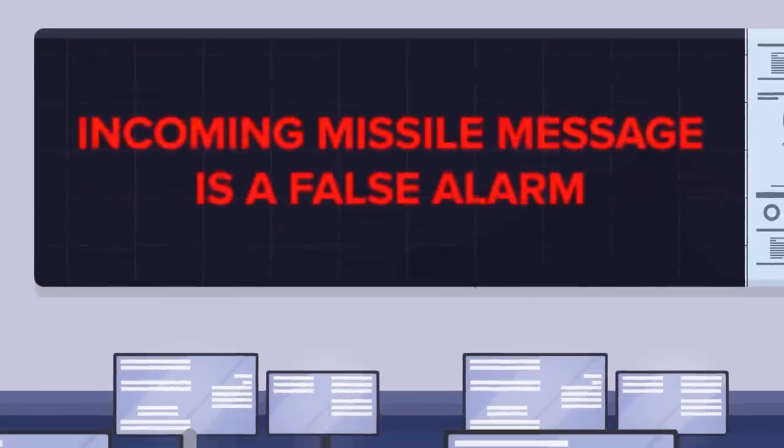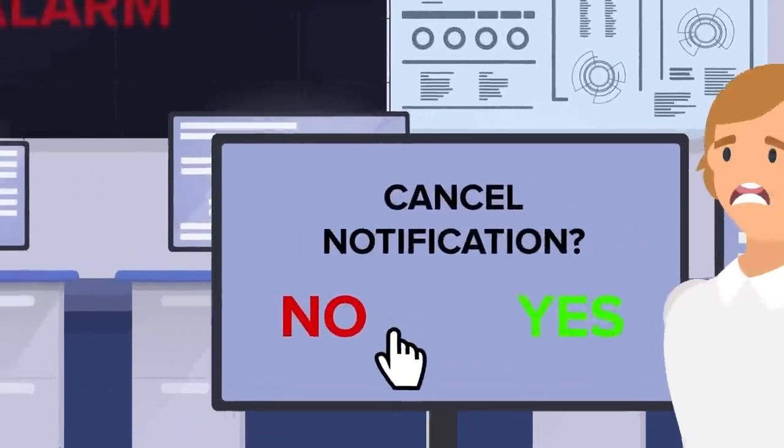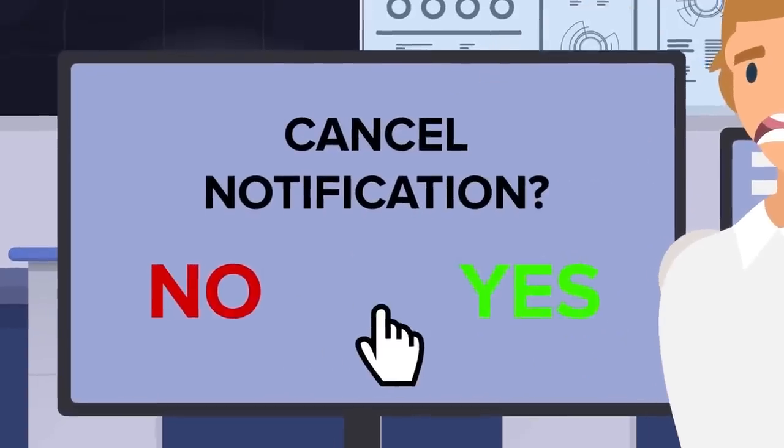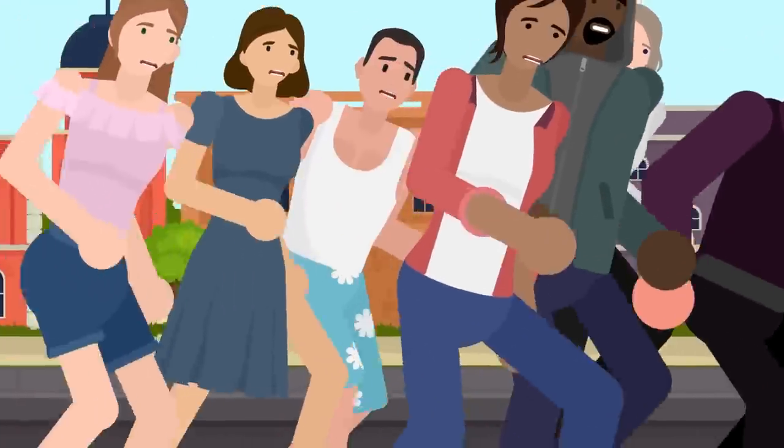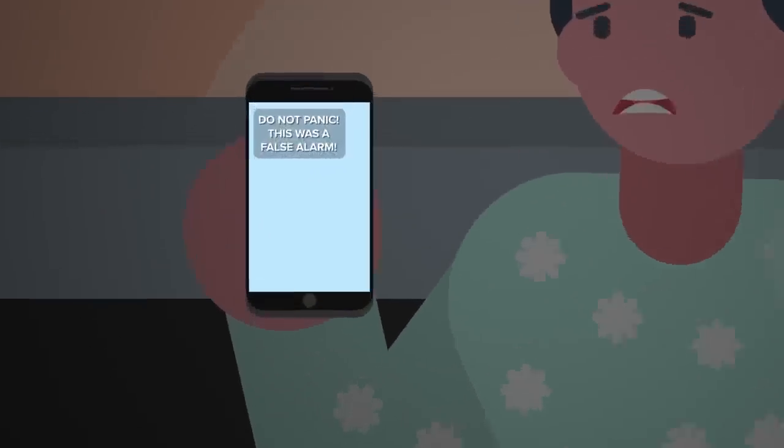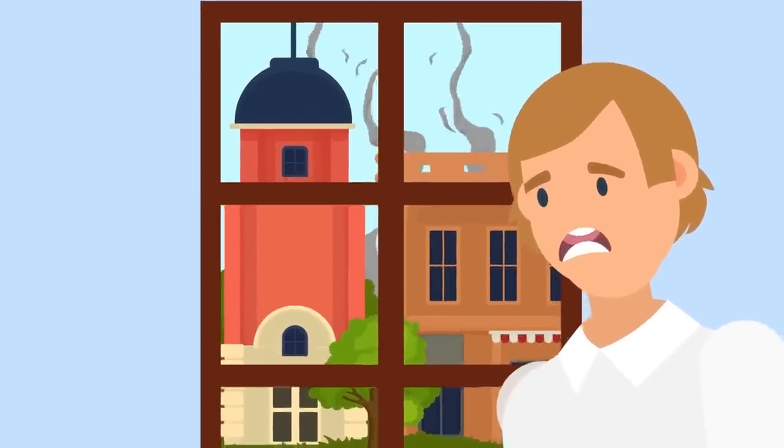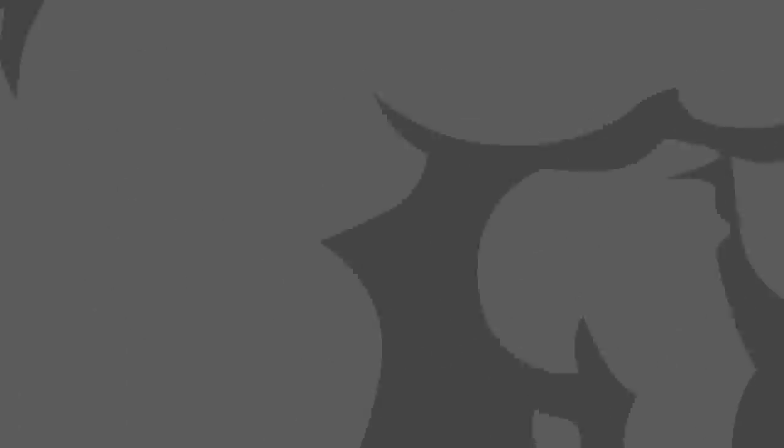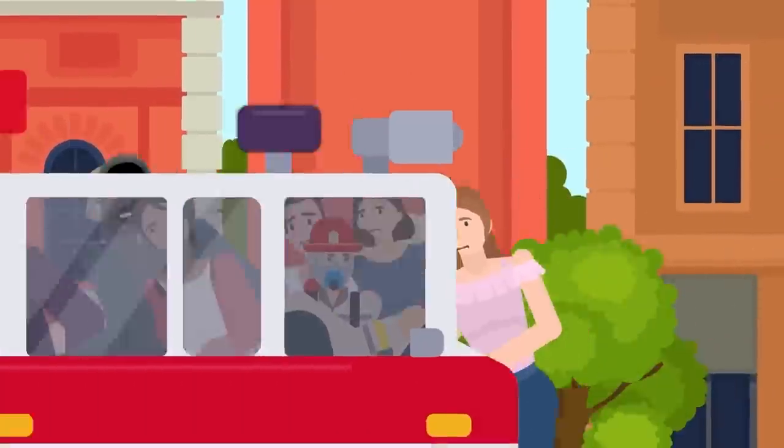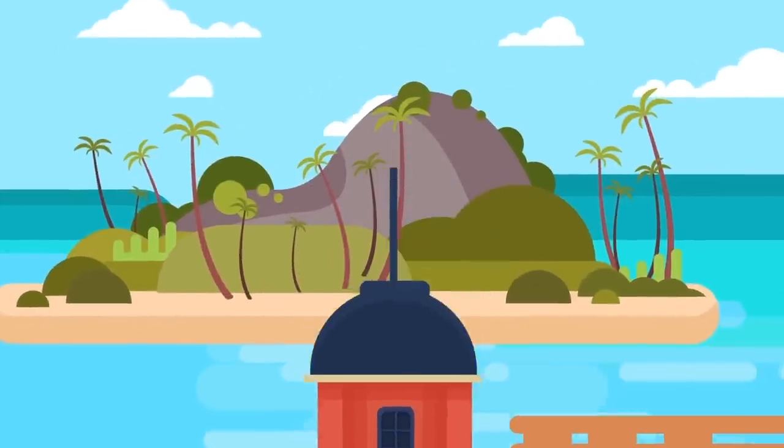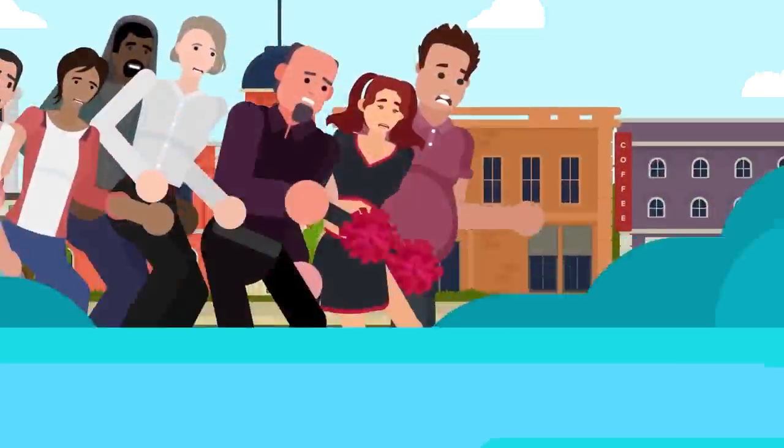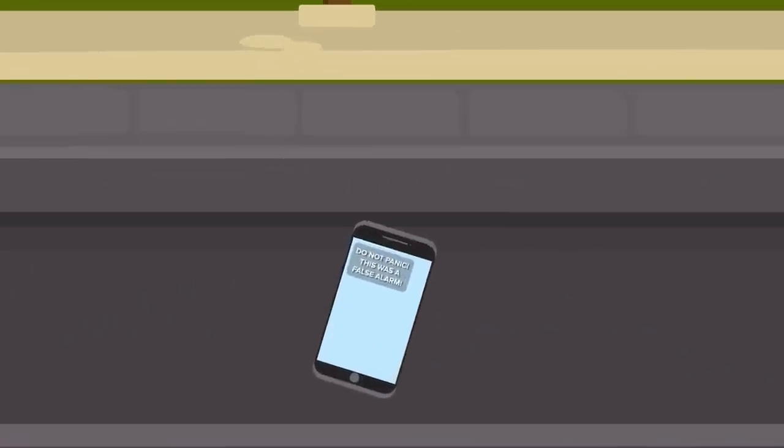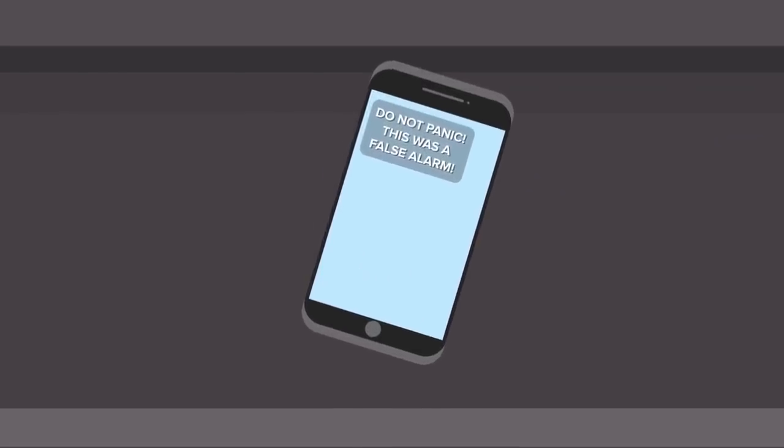The state warning point receives word that the incoming missile message is a false alarm. They issue a cancellation of the alert, which prevents it from being rebroadcast across the islands. This does not reverse the damage already done, but it does mean anyone who has not already received the message will not be given further false information. This could slow the panic, but as employees look out the window, they see smoke rising from Honolulu. A fire is broken out. Emergency responders rush to put out the flames while dodging hysteric people running through the streets. Even if there is no missile strike, the devastation to the islands could be immense. And the longer it takes for word to reach the public that this is a false alarm, the more damage will be done.